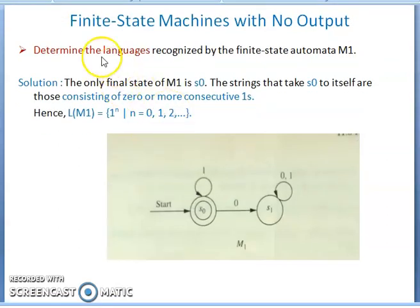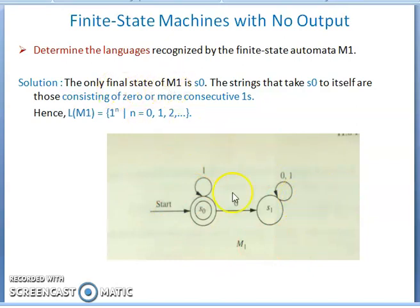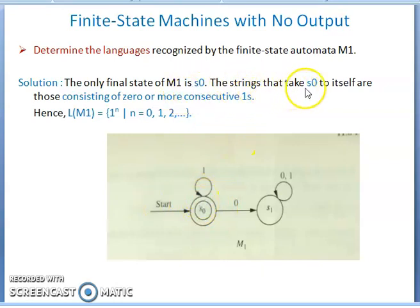Now, determine the language recognized by finite state automata m1. The only final state is s0 — indicated by a double circle — and the starting state is also s0. The strings that take s0 to itself are those consisting of zero or more consecutive ones.